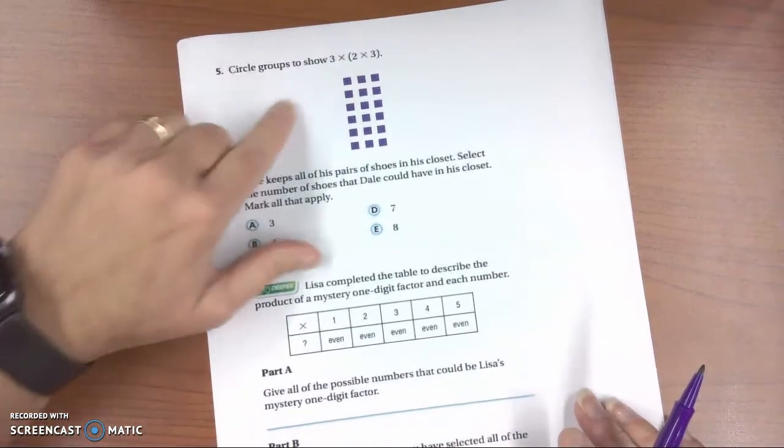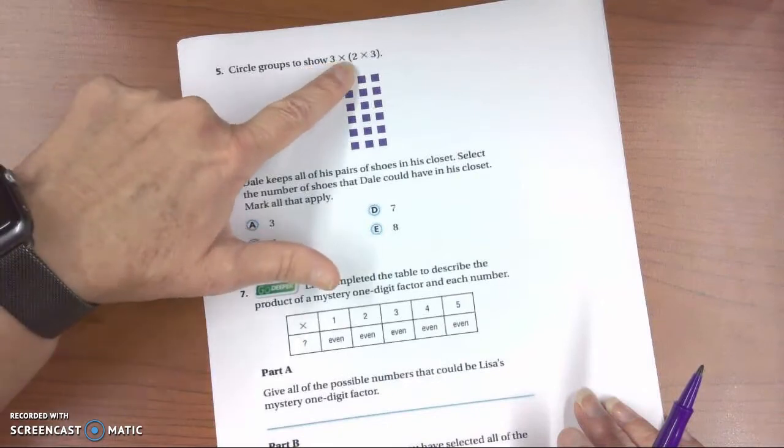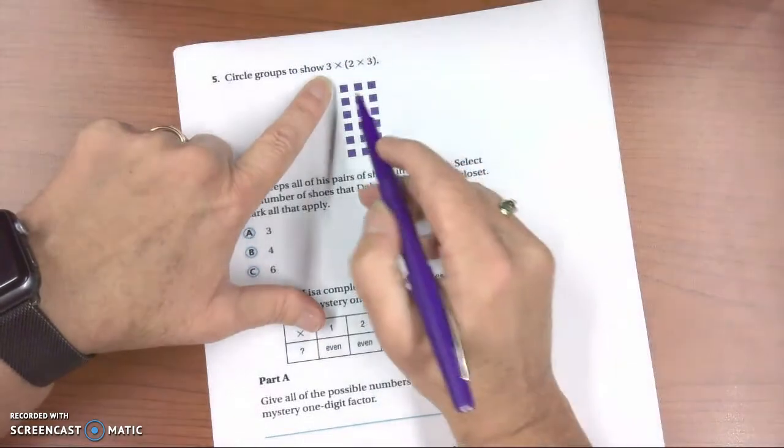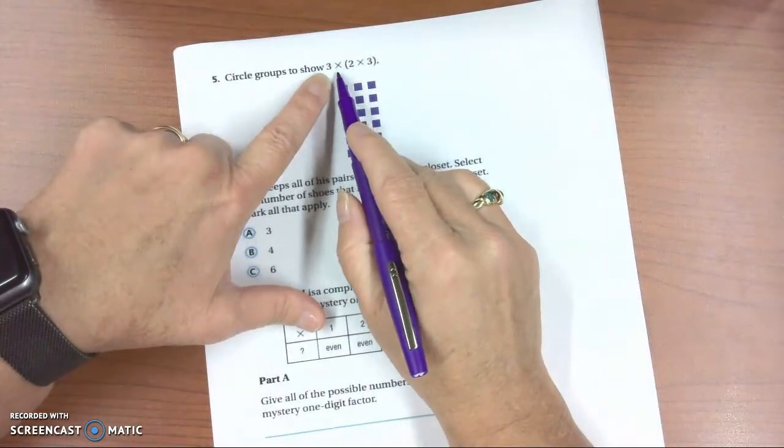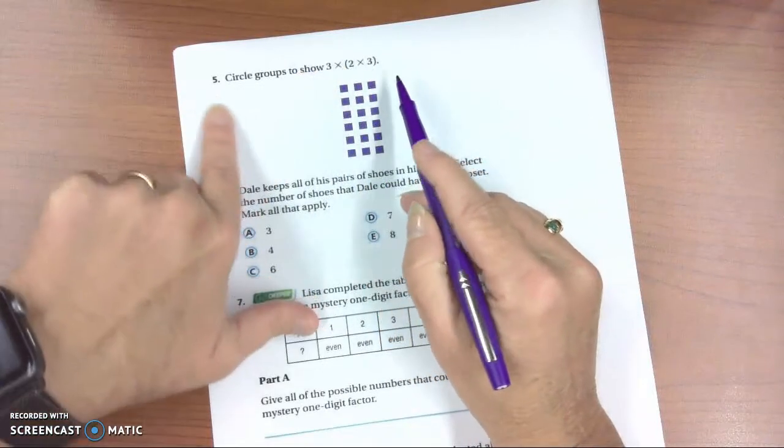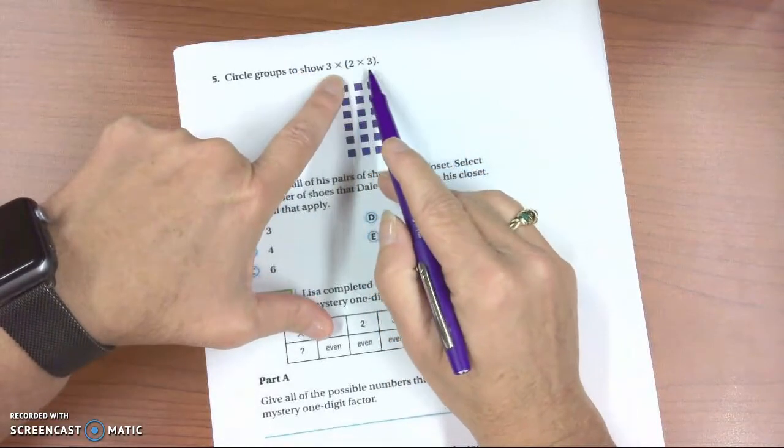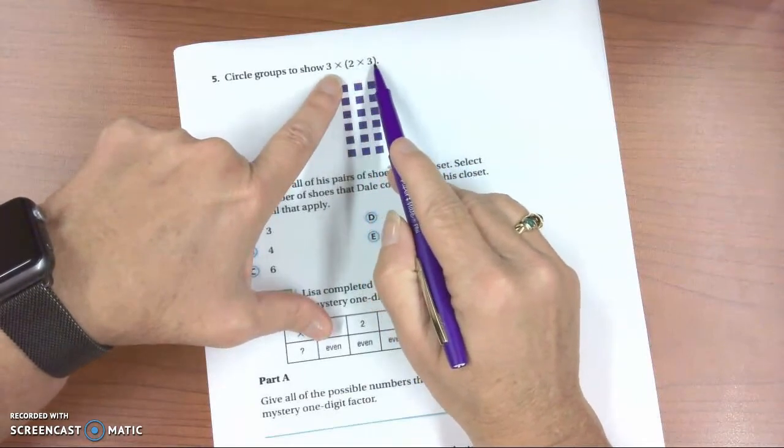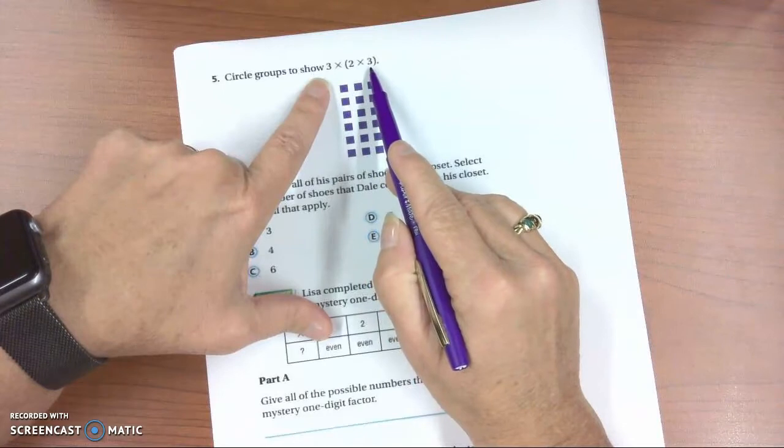Circle groups to show 3 times 2 times 3. So what this means, and one way to say this, is I want 3 groups of, or 3 times the quantity of, 2 times 3. And when we work a problem that has parentheses, we start with what's in parentheses.